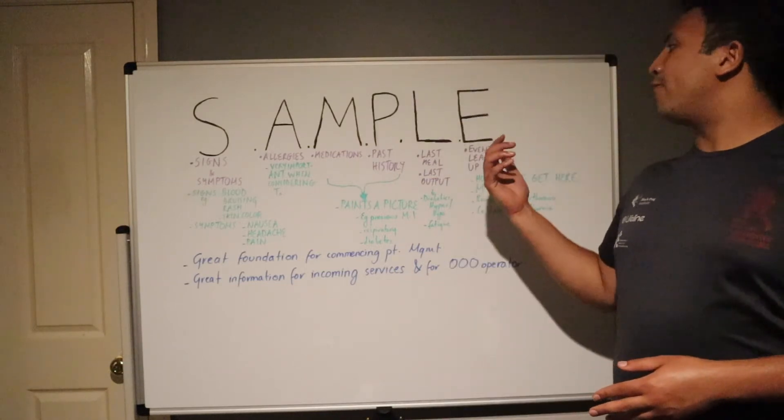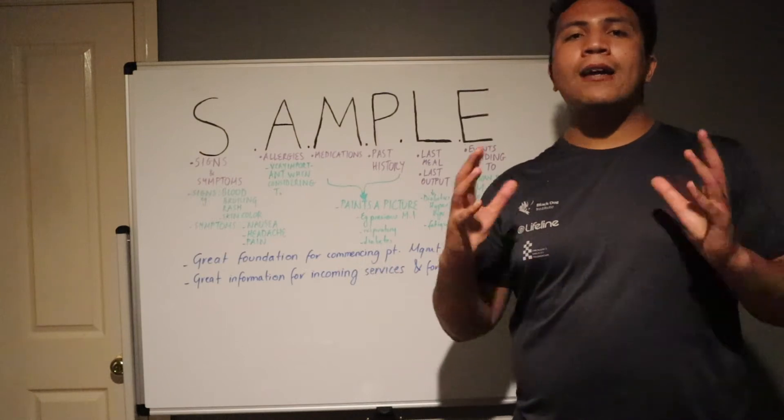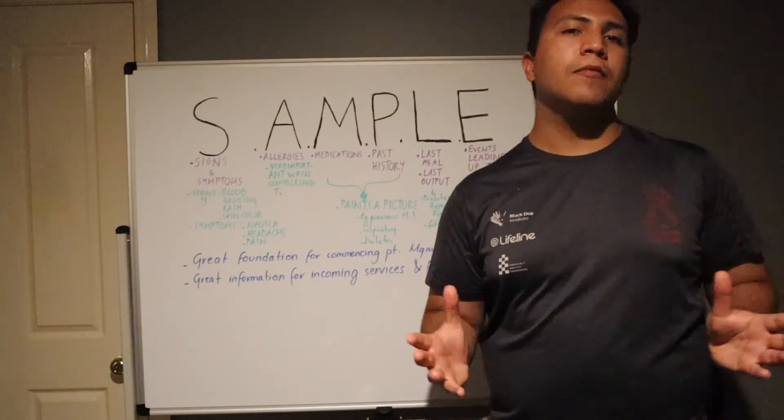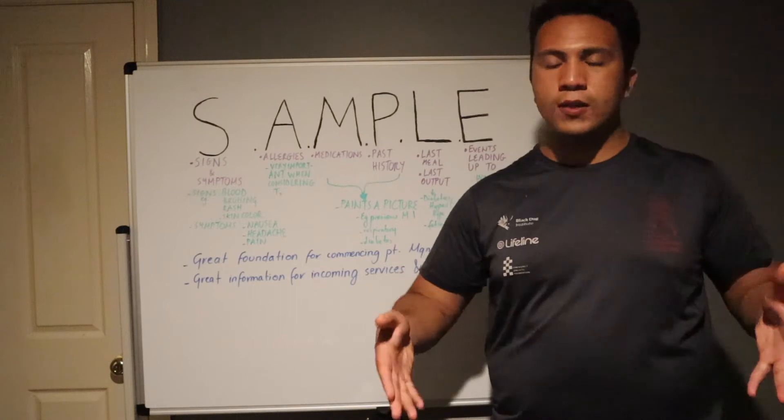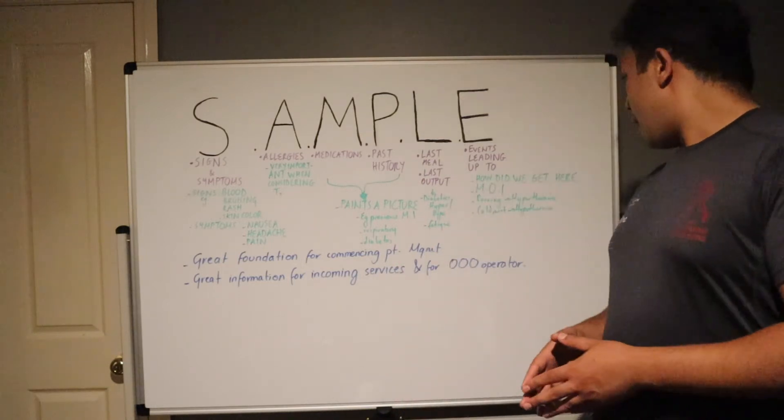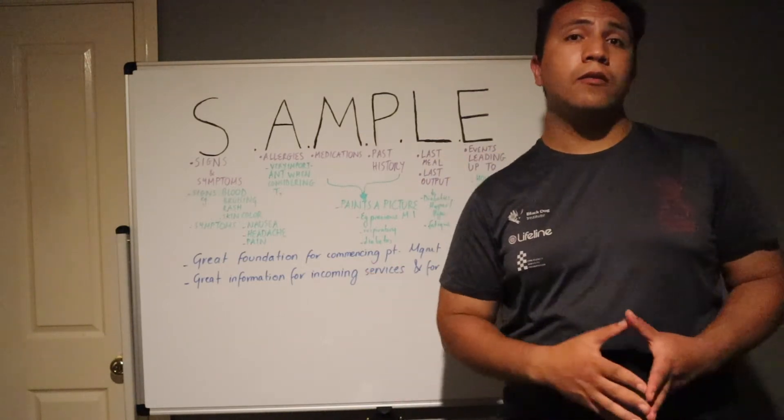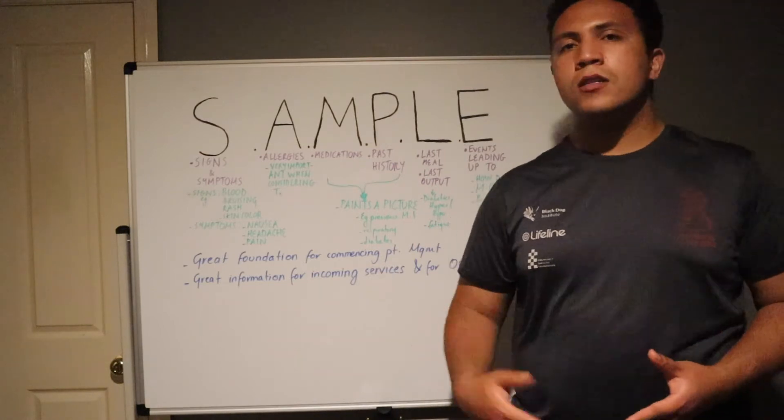You then look at E for events leading up. How did we get here? What's the mechanism of injury? What are the circumstances that led to what's going on right now? Was the patient running a marathon? Are they hypothermic? So on and so forth.